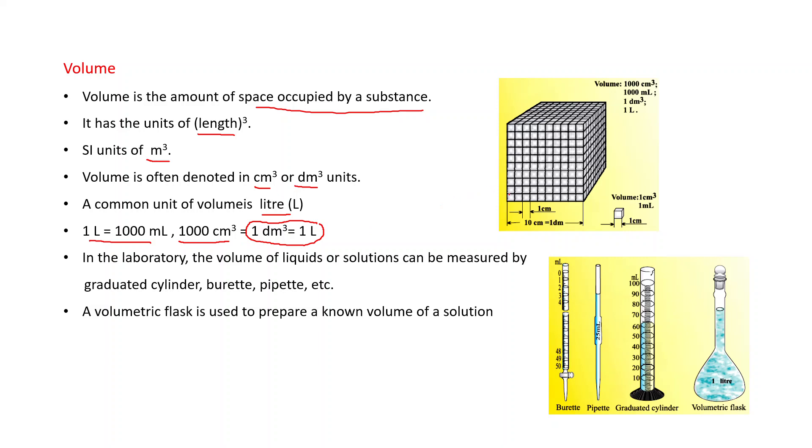From this diagram, you can understand this. This part, this is one centimeter, and from this to this, this is 10 centimeter, which is equal to one decimeter. 10 centimeter, that is equal to one decimeter. And if we make its cube, then we will get one decimeter cube. This is the cube of one decimeter, and that is equal to one liter. We can say one liter is equal to one decimeter cube, and that is equal to one thousand milliliter, and that is equal to one thousand centimeter cube. Or we can also say one centimeter cube is equal to one milliliter.